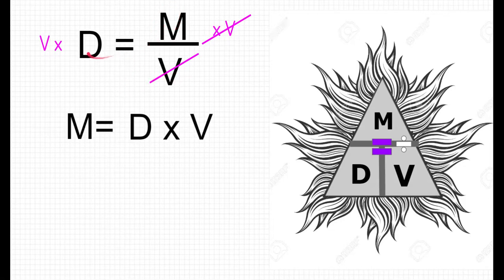Mass is equal to density times volume. Here it is cleanly written out. Well, let's take a look at our triangle. Mass on the top is equal to density times volume, which are right next to each other in that triangle. Well, now we can solve for mass, which is great.